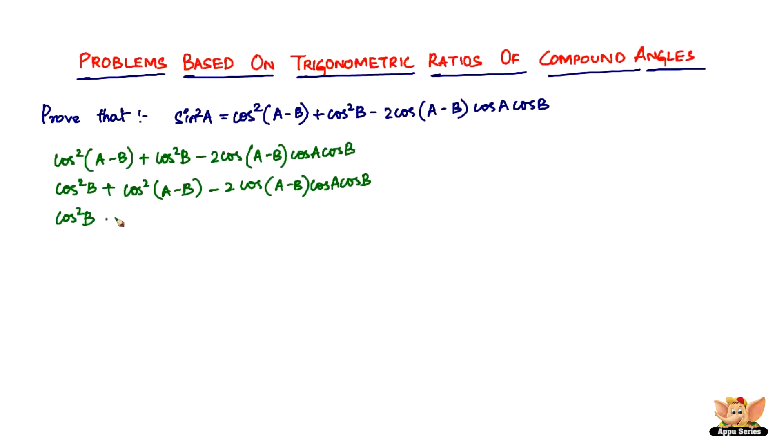Now write cos²B as it is, plus if you consider these two terms, see that it's got one term the same. Cos(A-B) is the same in both terms. Here it's got one extra, but doesn't matter. You can just take it out.